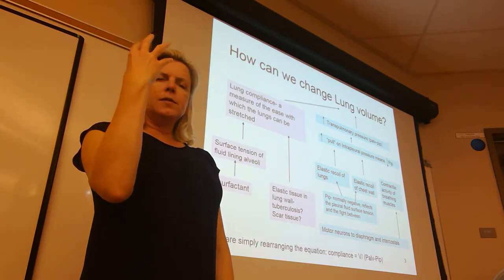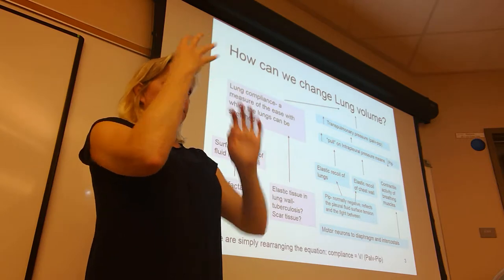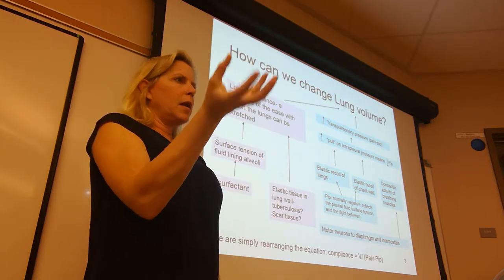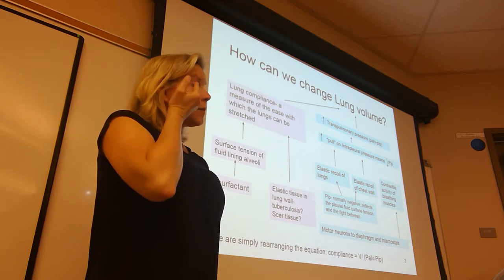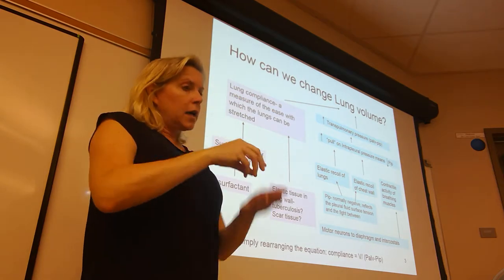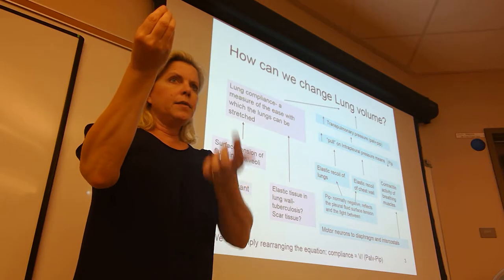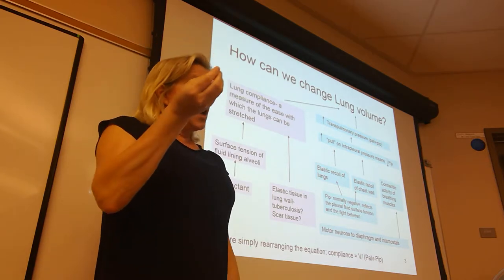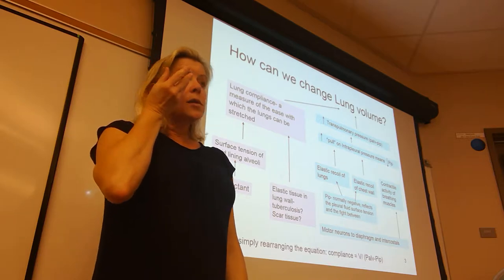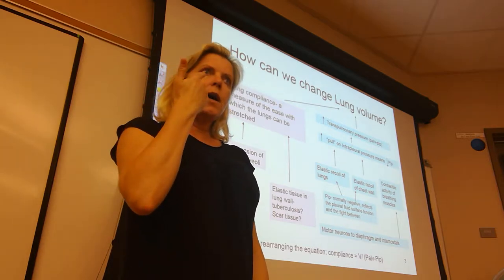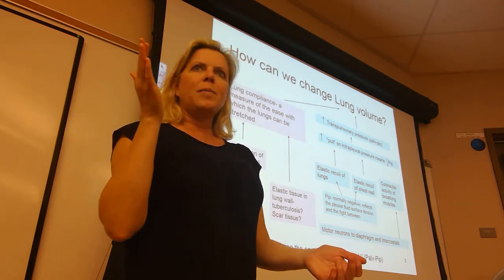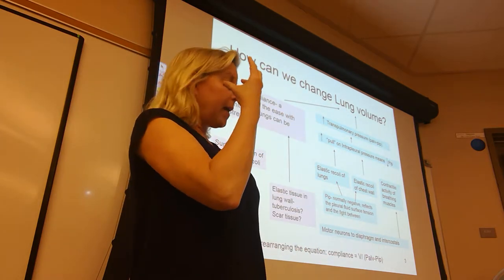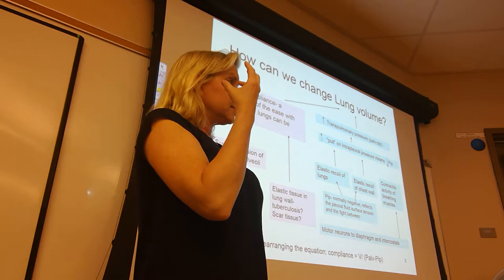A contact lens is a half-sphere piece of plastic we put on the surface of our eye. It comes out of a container wet, and the surface of our eye is also wet. When we put that wet contact lens on the wet surface of our eye, the cohesive properties of water make that contact lens stay on the cornea.